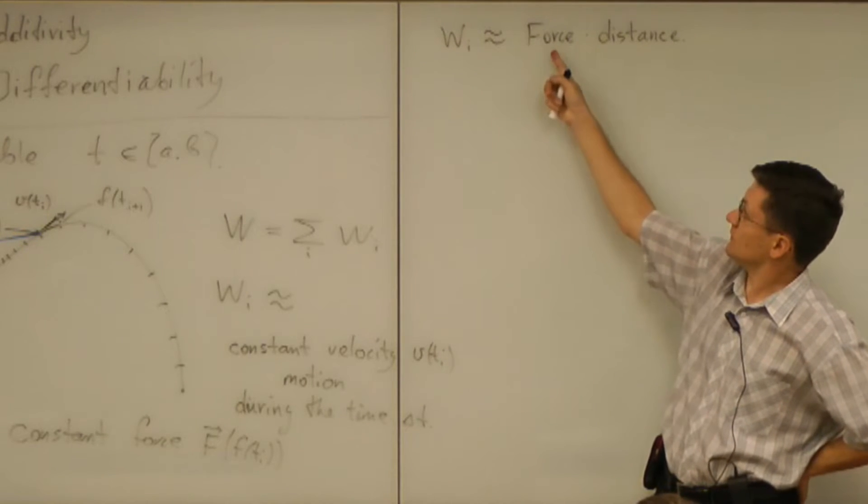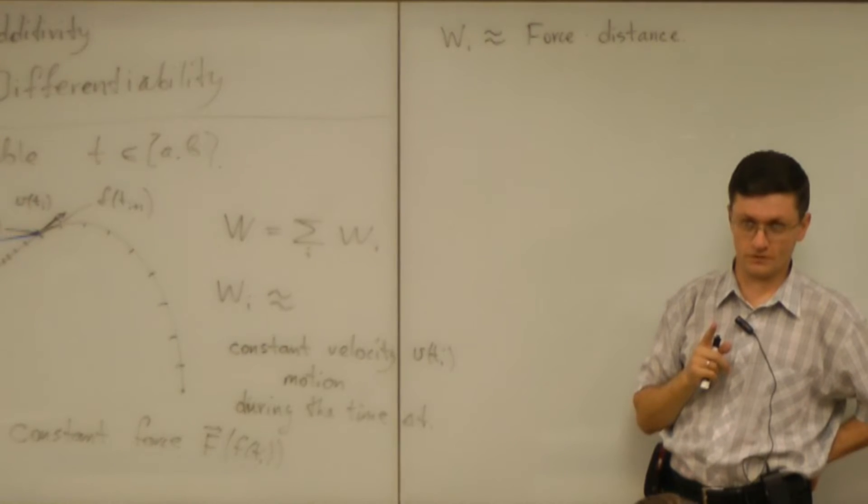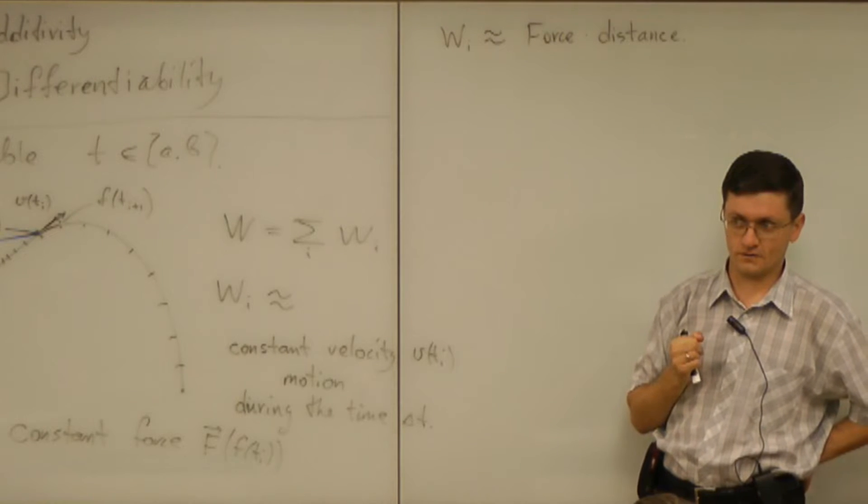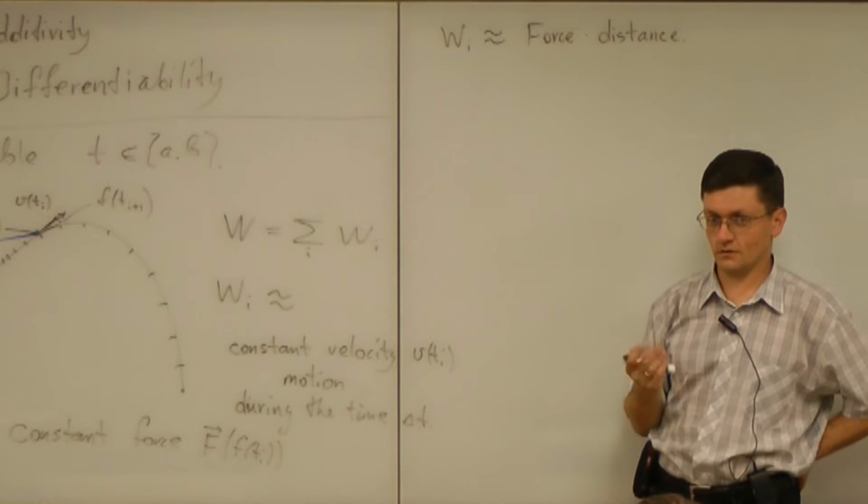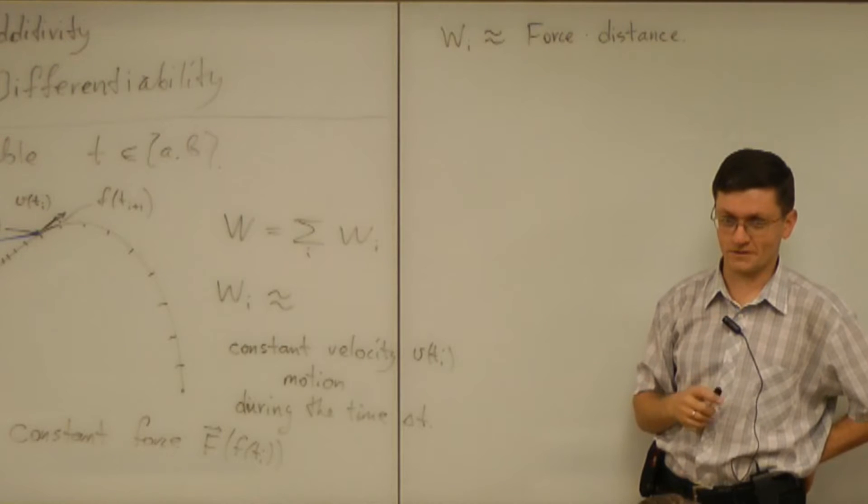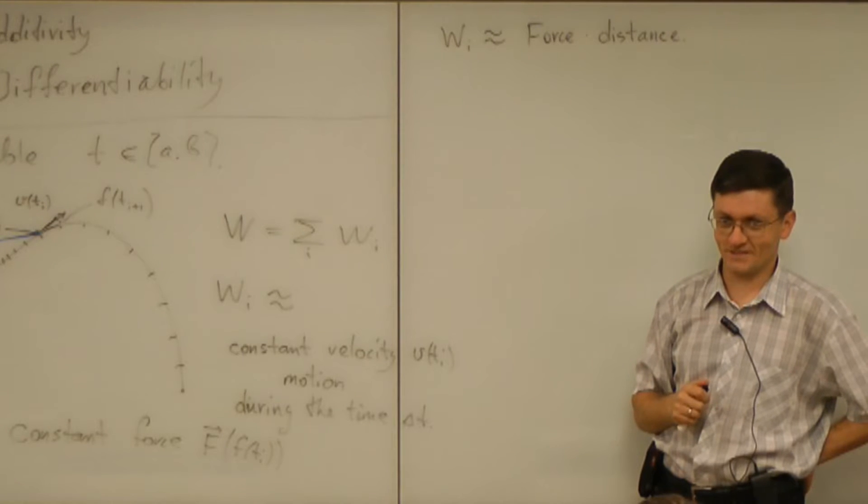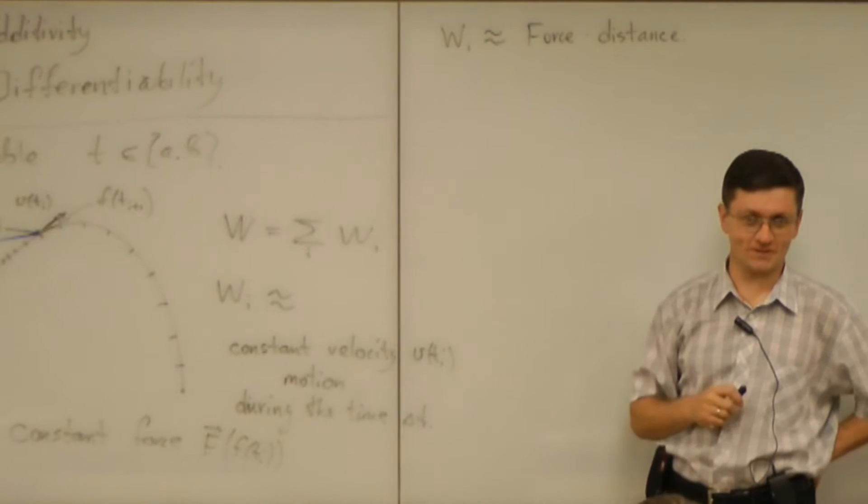But then we have to multiply a vector by a vector and we have at least two ways to do it. Right? Either dot product or vector product. Or maybe there are other products yet undiscovered. Why should it be dot product? What's the reason?